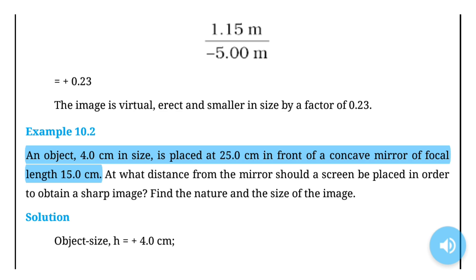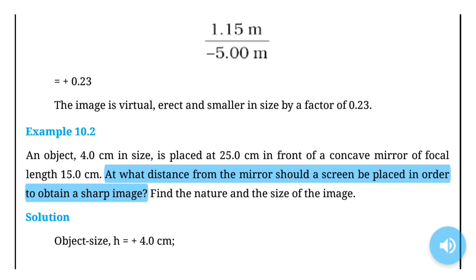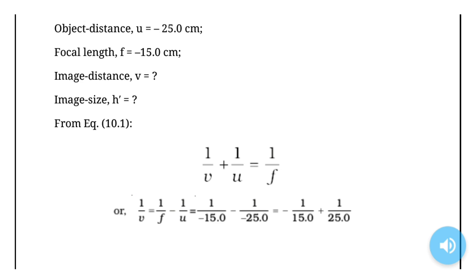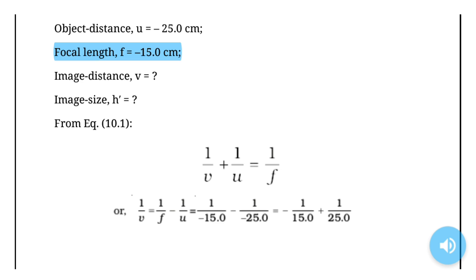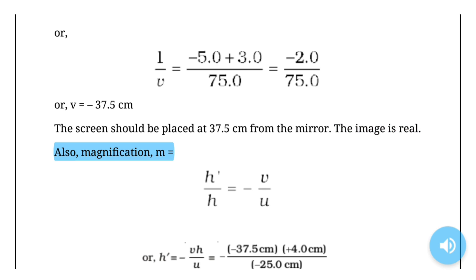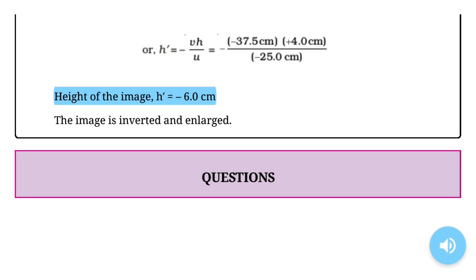Example 10.2: An object 4.0 cm in size is placed at 25.0 cm in front of a concave mirror of focal length 15.0 cm. At what distance from the mirror should a screen be placed to obtain a sharp image? Find the nature and size of the image. Solution: Object size h = +4.0 cm; object distance u = −25.0 cm; focal length f = −15.0 cm. Using the mirror formula, v = −37.5 cm. The screen should be placed at 37.5 cm from the mirror. The image is real. Magnification m gives height of the image h′ = −6.0 cm. The image is inverted and enlarged.